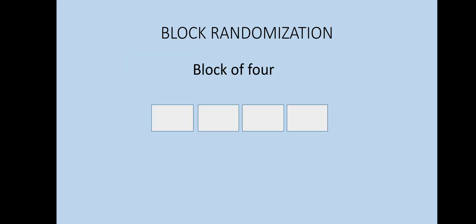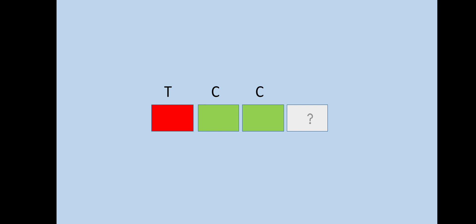Consider this example of block randomization with a block of 4. By simple randomization, the first participant is selected into the treatment group, the second into the control group, and the third also into the control group. Now for the fourth participant, to achieve balance between the groups, this participant is chosen not by randomization but by an algorithm — assigned to the treatment group — and balance is now achieved.